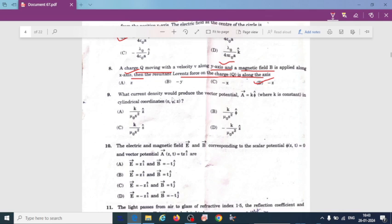What current density would be produced by the vector potential A is equal to k phi cap in cylindrical coordinates s phi z. So here the current density j we have to find out. The formula for current density is del j is equal to minus d rho by dt. So here they have given vector potential. So in terms of vector potential we need to solve the current density, that is option B, k divided by mu naught s square phi cap.